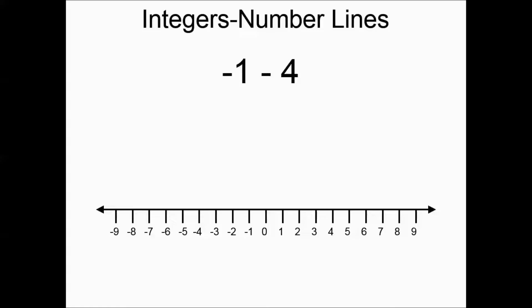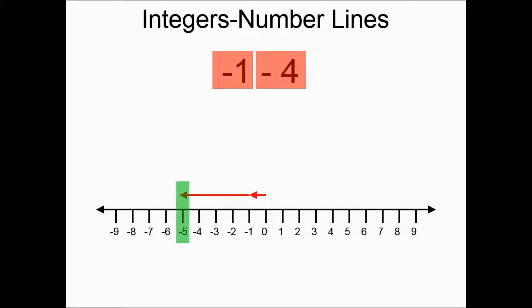Negative one minus four — try it on your own for a sec, you can pause if you need to. That's going to be left one, left four. The arrows went in the same direction, so you're adding the values. One plus four is five and you have a bunch of negatives, so the answer is negative five.